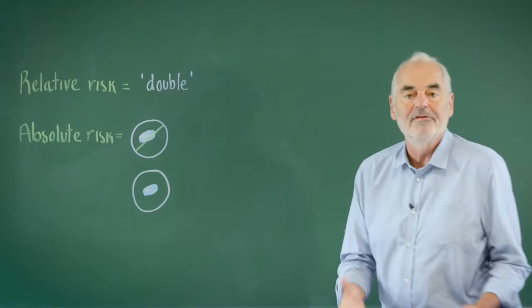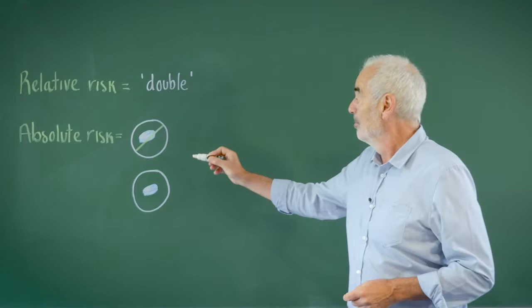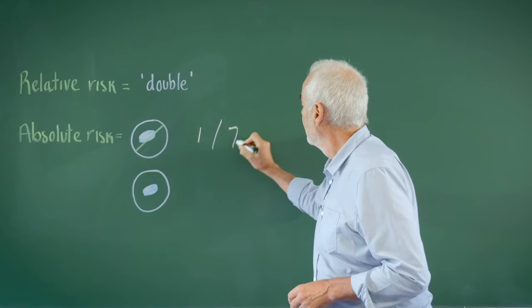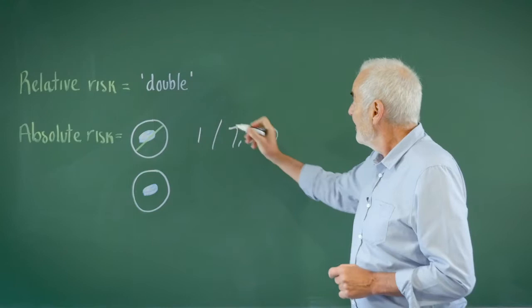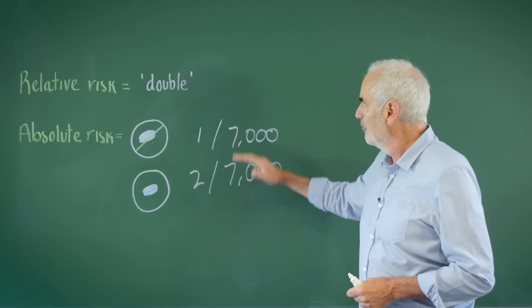And for that we need to know the absolute risk of a venous thromboembolism in the group of people not taking a pill. At that time this was estimated to be about one in 7,000. So the doubling takes that up to two in 7,000 in the group of women who are taking that contraceptive pill. So the increase in absolute risk is one in 7,000 and this to be honest is fairly small.